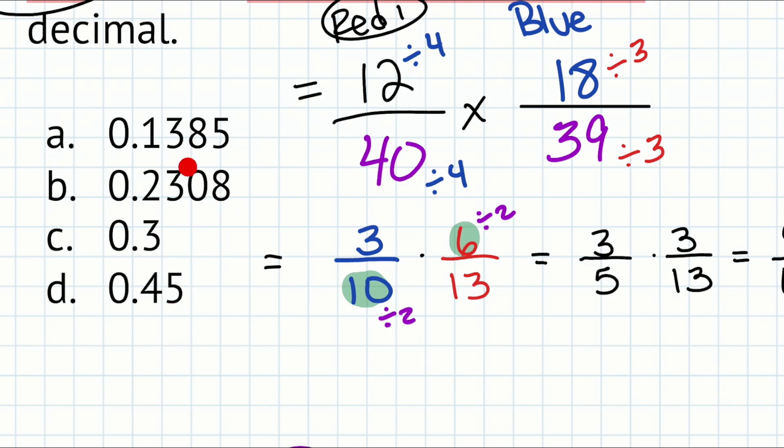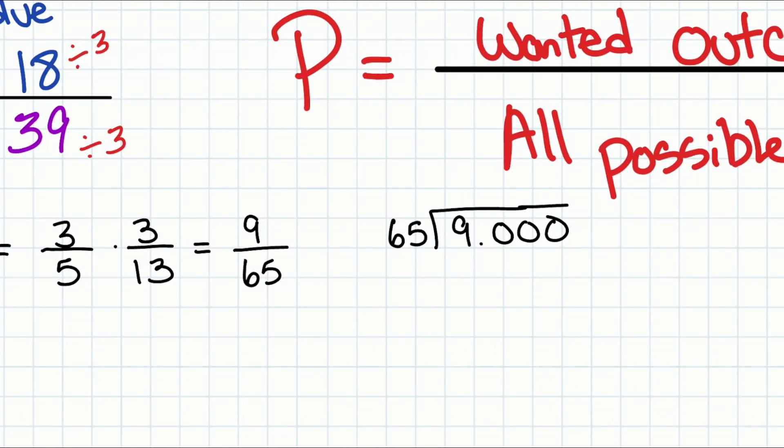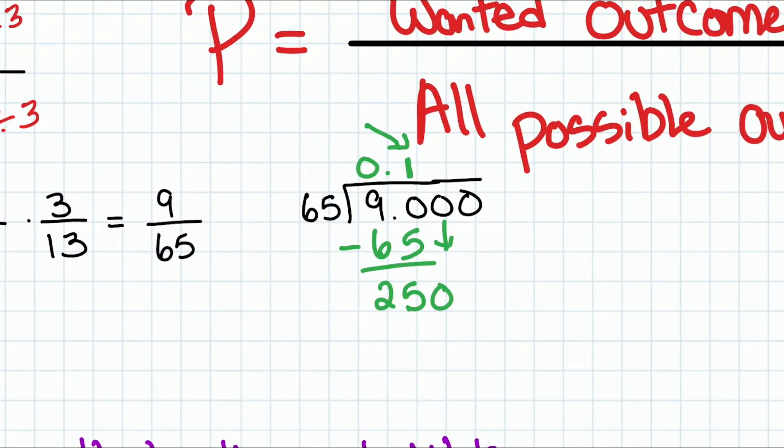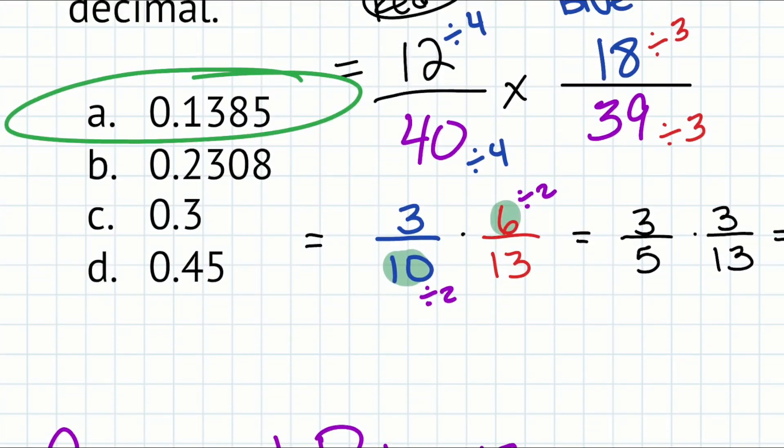65 goes into 9, it doesn't, so that'll be 0. But 65 goes into 90 just once. We subtract 65, this will end up being 25. Drop the 0 for 250. But it doesn't matter. Our answer starts as 0.1. Take a look. A is the only answer that starts with 1. And there we go. No need to continue working. If we did, 65 goes into 250, I believe that would be 3 times. 65 times 3 would be 195. We have 55 left over. Now we have 0.13, which should have made it even more obvious.